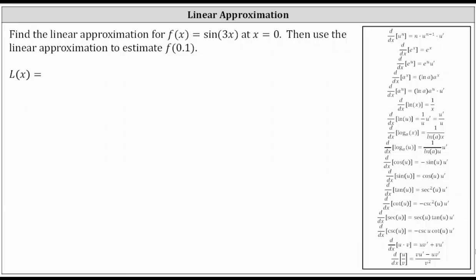We're asked to find the linear approximation for f of x equals sine three x at x equals zero, and then use the linear approximation to estimate f of 0.1. The linear approximation for f of x at x equals zero would be the equation of the tangent line to f of x at the point where x equals zero, which means we need to determine the point of tangency and the slope of the tangent line to determine the linear approximation for the given function.